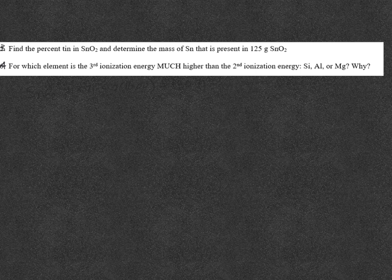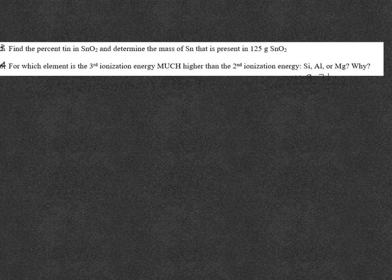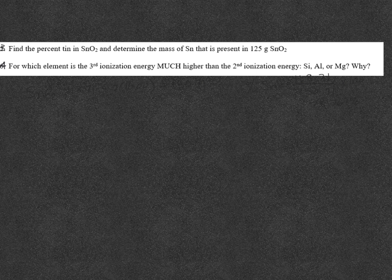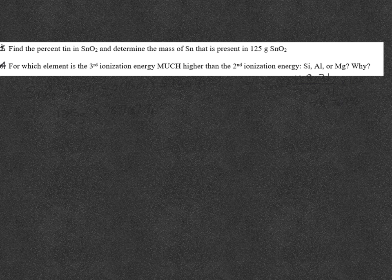My percent tin is going to be the mass of tin divided by the total mass times 100. And I get 78.767%. Now, if I multiply that times 125 grams, I will determine how much tin is in the SnO2. Then I get 98.5 grams.